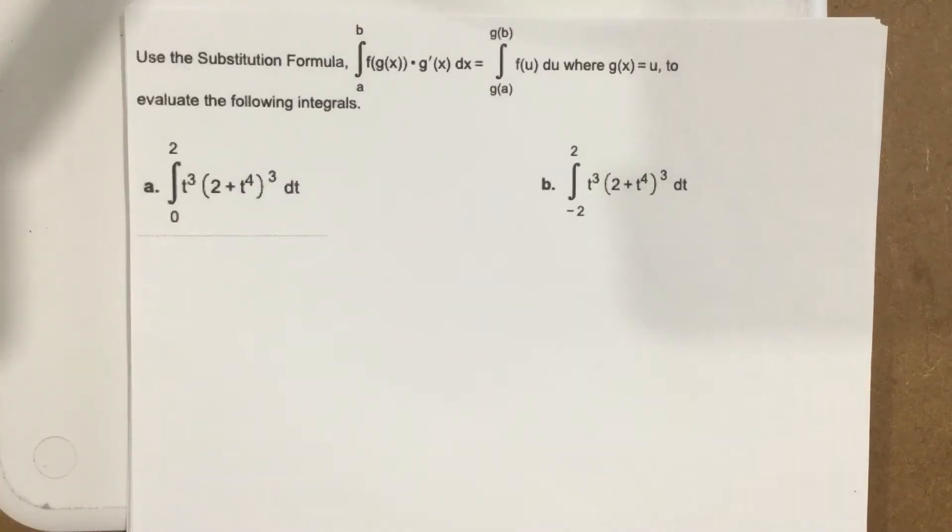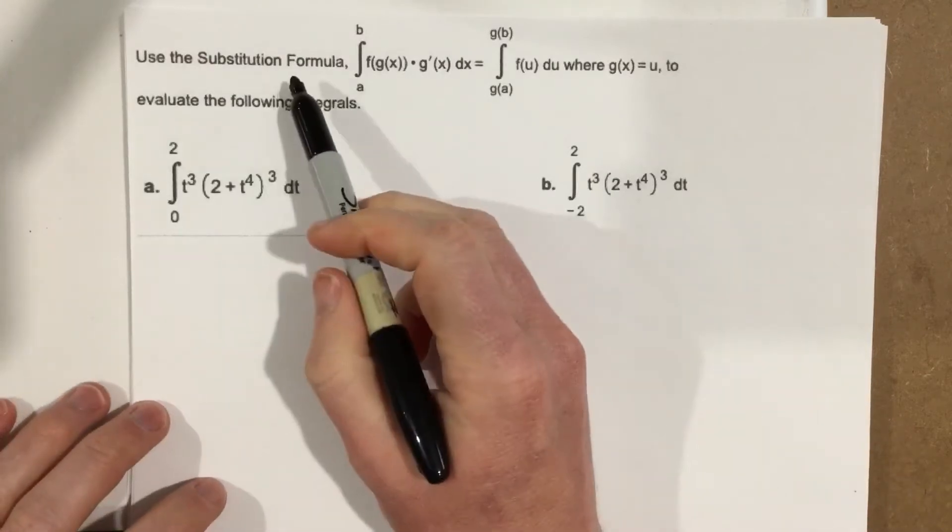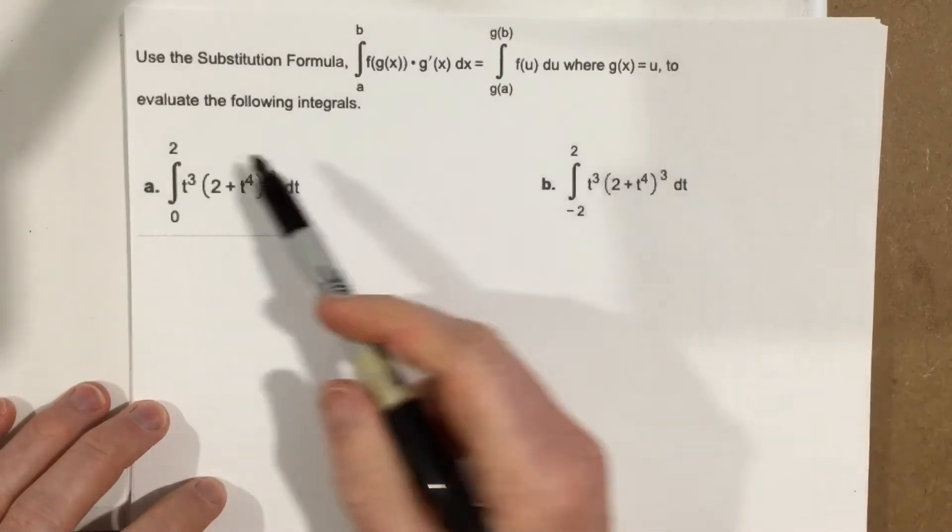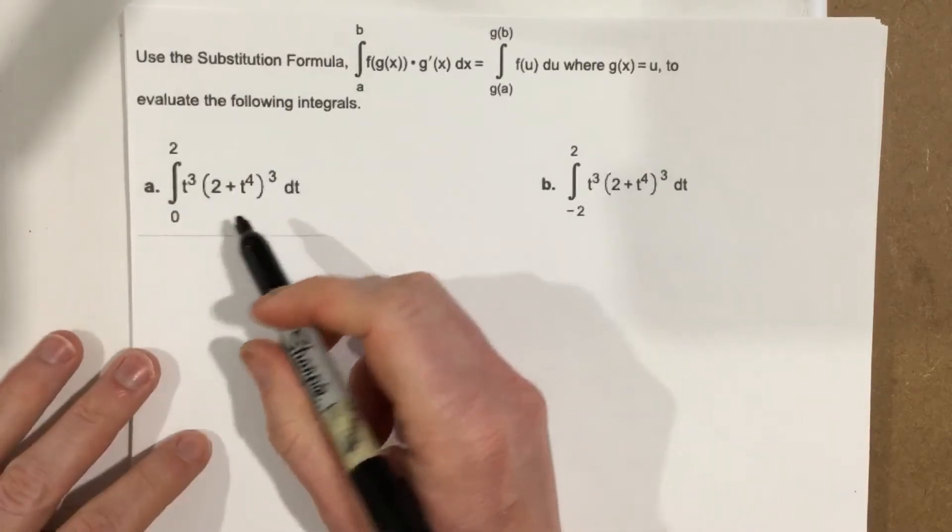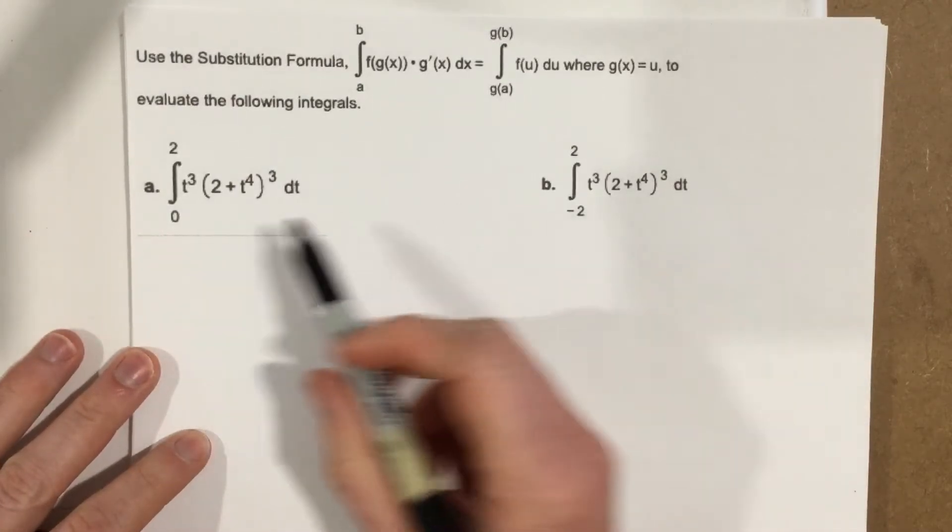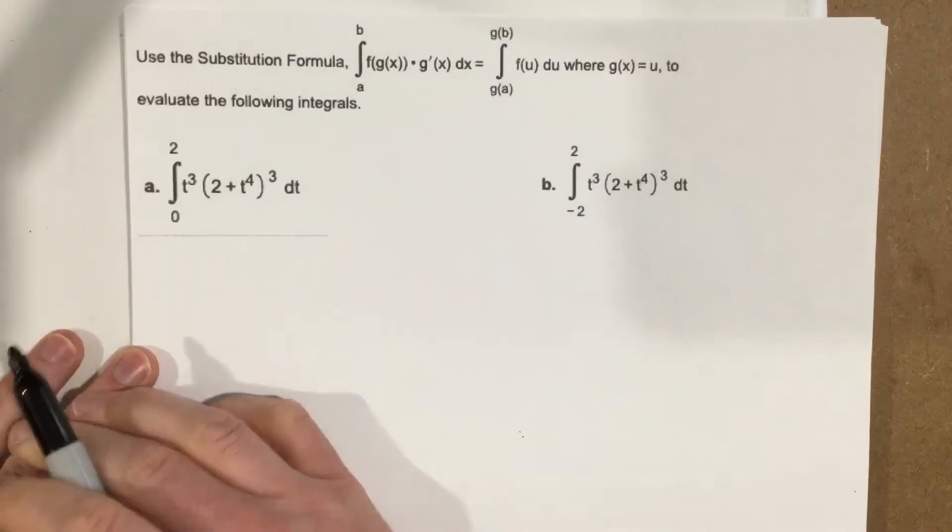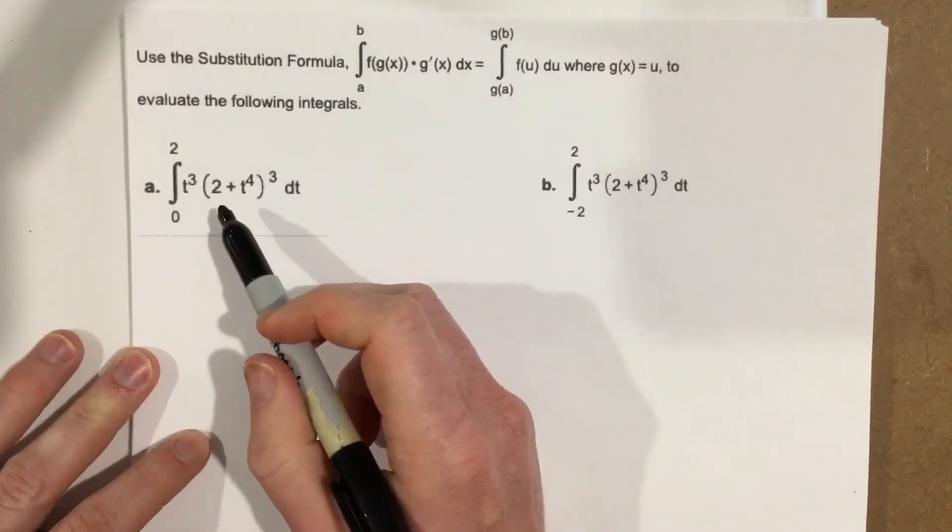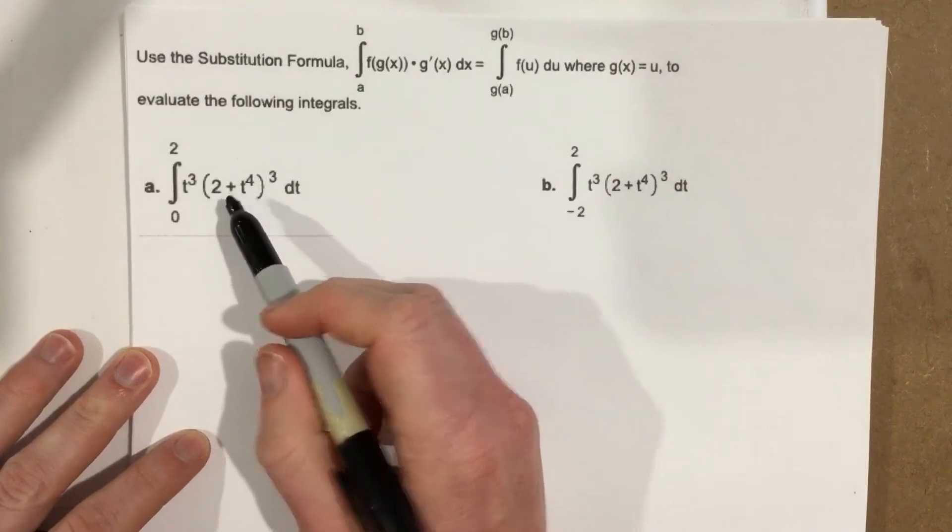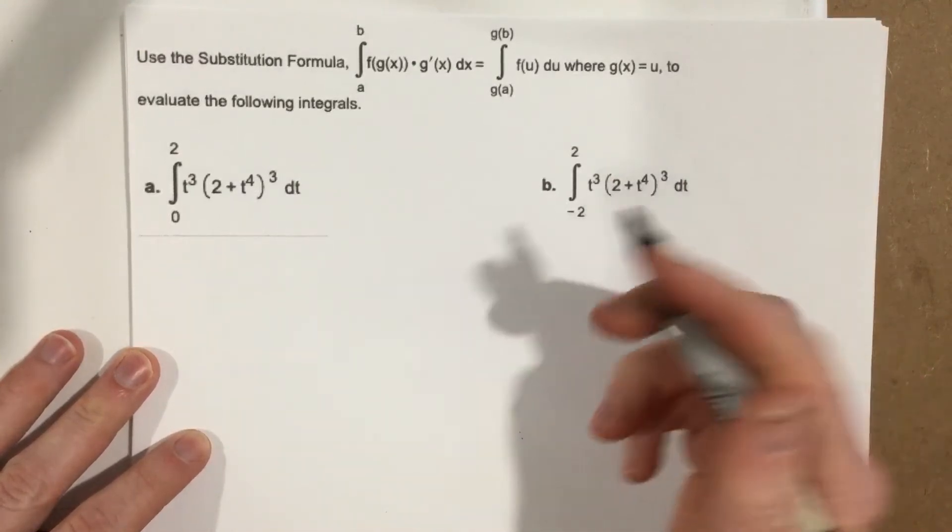This is problem number one from section 5.6. It wants us to use the substitution formula to evaluate the following integrals. So basically it just wants us to use substitution to evaluate these integrals. Now, they're the same integral. So the good news with it being the same integral is we can essentially do the antiderivative once and then just apply it to the second one. So let's go ahead and do that.